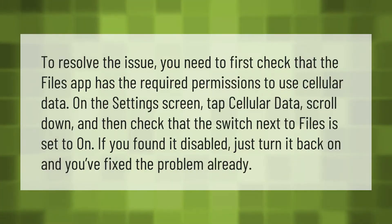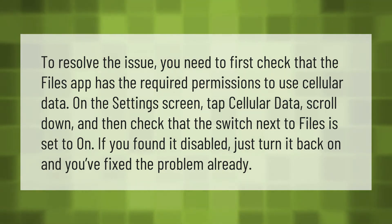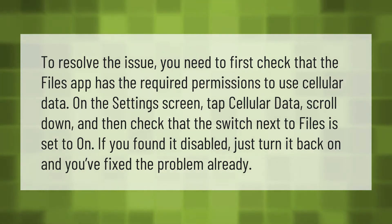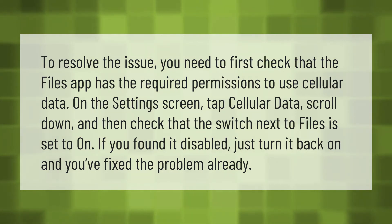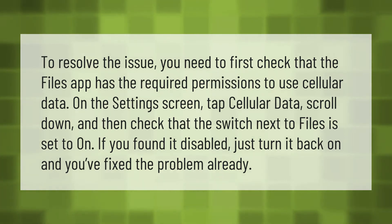To resolve the issue, you need to first check that the Files app has the required permissions to use cellular data. On the Settings screen, tap Cellular Data, scroll down, and check that the switch next to Files is set to on. If you found it disabled, just turn it back on and you've fixed the problem.